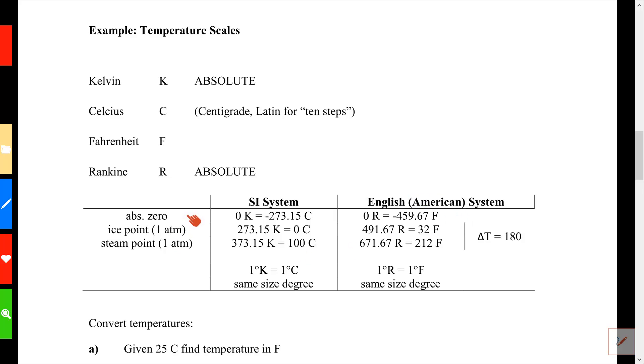We also keep track of these by where is absolute zero, where is the ice point, and where is the steam point. Now a comparison among these is the distance between the ice point and the steam point. In the SI system, there's 100 degrees between the ice point and the steam point. And in the English system, there's 180 degrees.